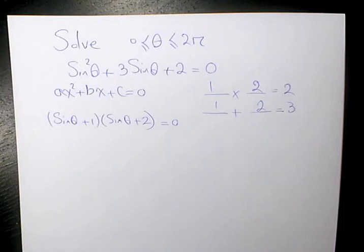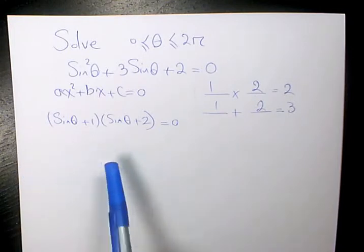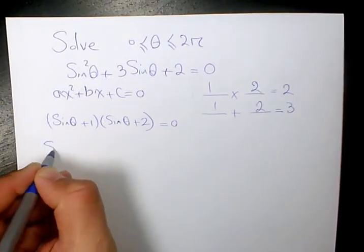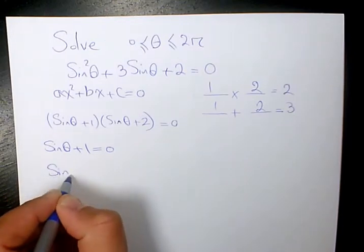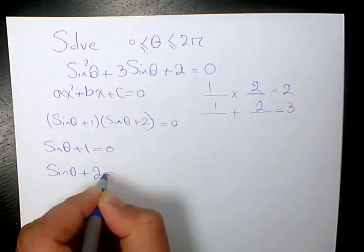We know when we have two expressions, the product of two expressions is 0. It means that any of this expression can be 0. Why? Because 0 times any expression will be 0. So we have sine theta plus 1 equals to 0, or sine theta plus 2 equals to 0.